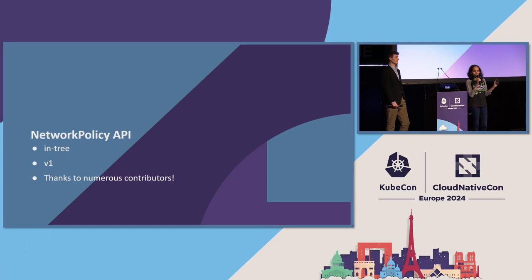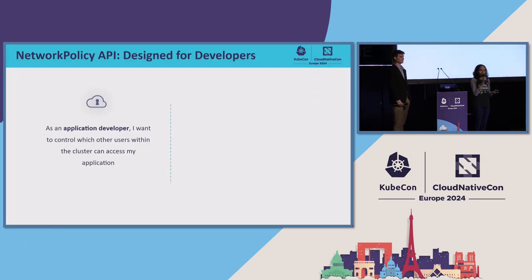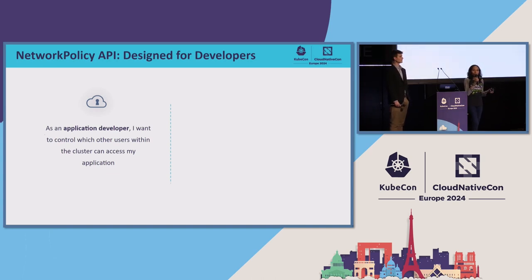Let's look a little bit into what the network policy API is. I want to give a huge shout out to numerous contributors in the community who have made this possible. Some of the use cases for network policies — the reason behind why we have this API — is that it was designed keeping application developers in mind. It was meant for namespace owners. As an application developer, you might want to control what's talking to your pods, what can talk, and what should not.